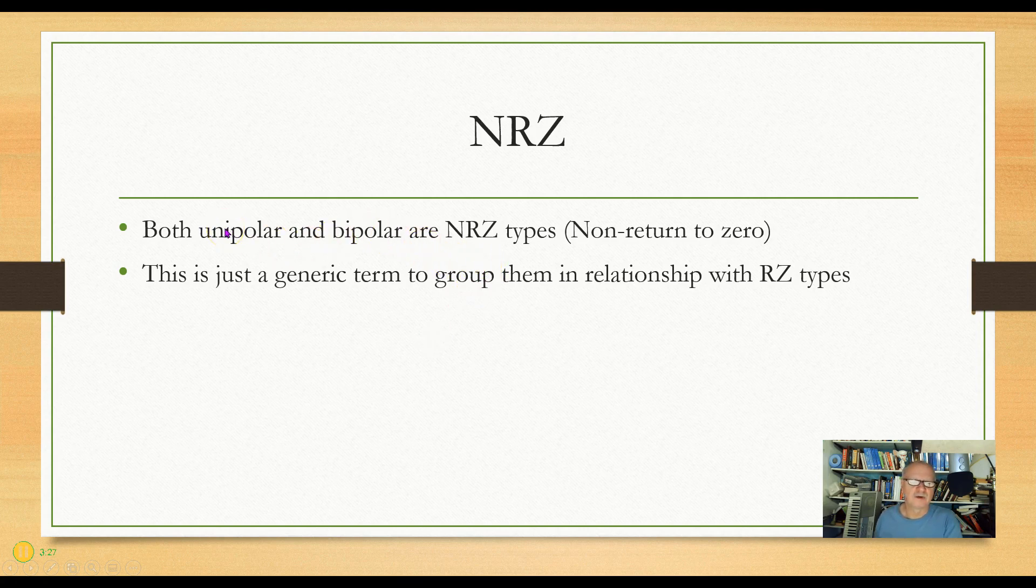There is also something called NRZ. Unipolar and bipolar, the way I described them in earlier slides, are NRZ types, non-return to 0. So it's just the opposite of return to 0. It's just sort of a generic term. All right, thank you very much.